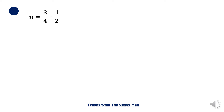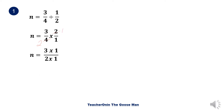Let us consider the following example. n is equal to three fourths divided by one half. First, I'll interchange the numerator and denominator of one half, then proceed to multiplication of fractions. So I have three fourths times two over one. I'll factor out two and four — four divided by two is equal to two, and two divided by two is equal to one. So n is equal to three times one all over two times one. Three times one is three and two times one is two, giving three over two.